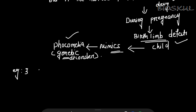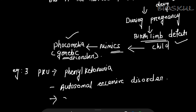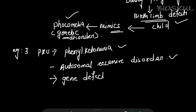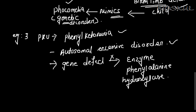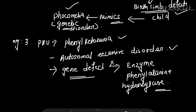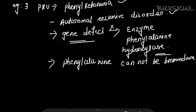Example number three is PKU — phenylketonuria. Phenylketonuria is an autosomal recessive disorder. There is a gene defect which means the enzyme phenylalanine hydroxylase cannot be synthesized. This enzyme is required to convert phenylalanine to tyrosine. Because of the gene defect, phenylalanine cannot be broken down.